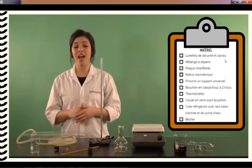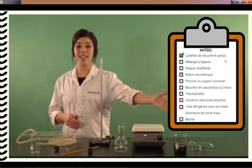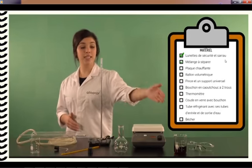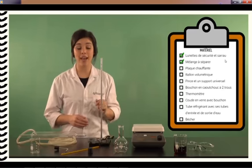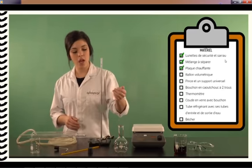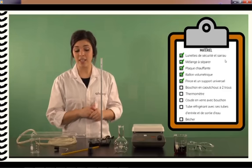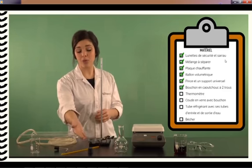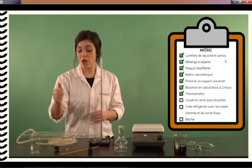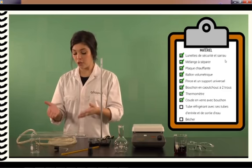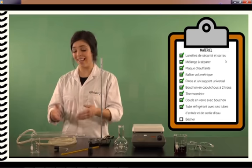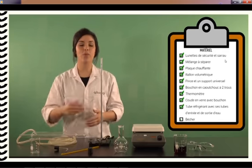Pour réaliser l'expérience, en plus du sarreau et des lunettes de sécurité, on aura besoin d'environ 100 ml du mélange, d'une plaque chauffante, d'un ballon de 250 ml, d'une pince et d'un support universel, d'un bouchon en caoutchouc à deux trous, d'un thermomètre, d'un coude en verre avec son bouchon, d'un tube réfrigérant avec les tuyaux d'entrée et de sortie d'eau, ainsi qu'un bécher. L'expérience doit se dérouler près d'un évier pour faire circuler l'eau froide.